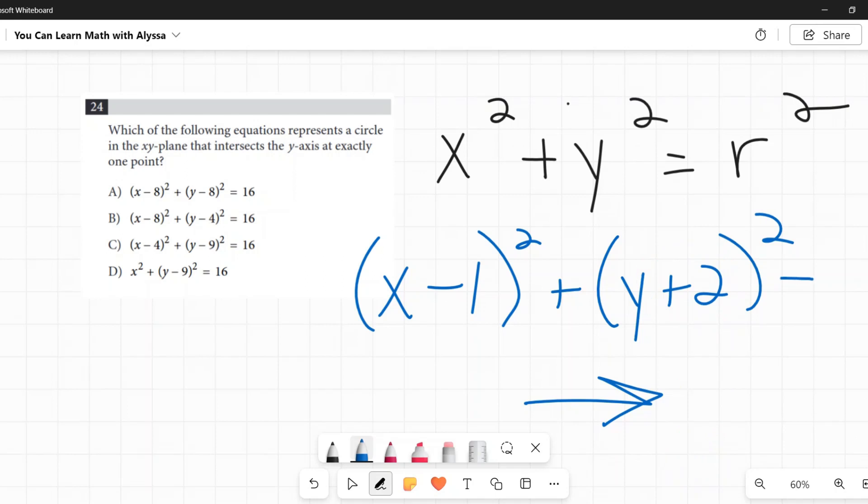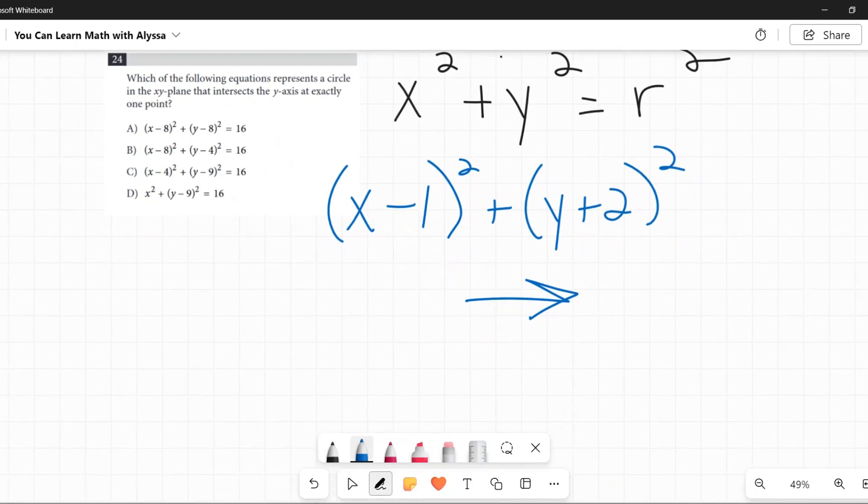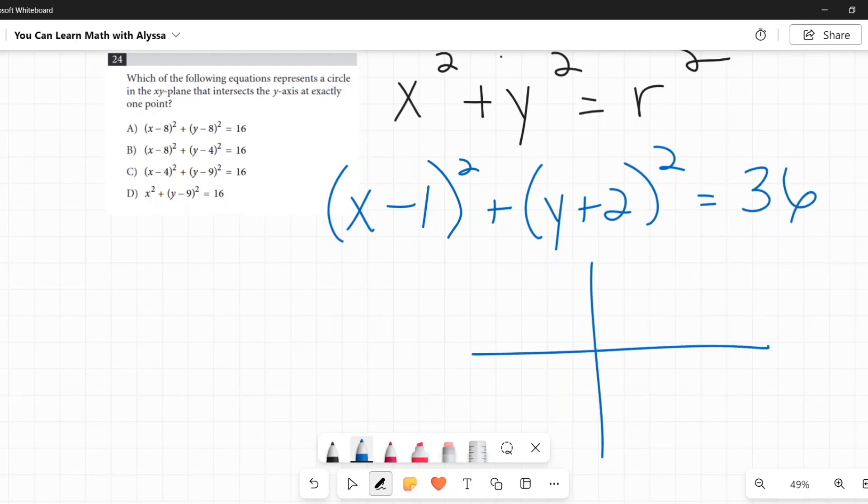And then we would still have that radius squared, whatever it is. So in this example, let's say if I had x minus 1 squared plus y plus 2 squared equals, let's say, 36. That would mean I had a circle that it moved, the center moved to the right 1, and it moved down 2, again, opposite of both of those. And so there is its center.